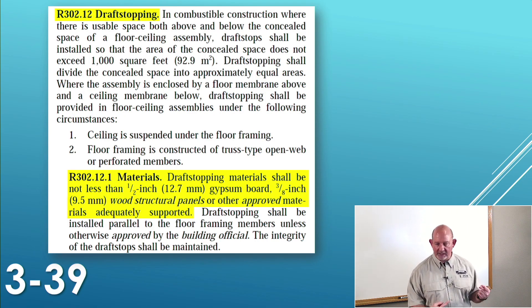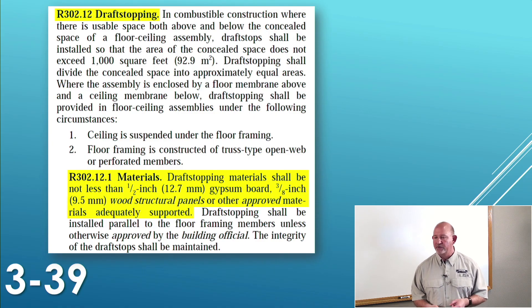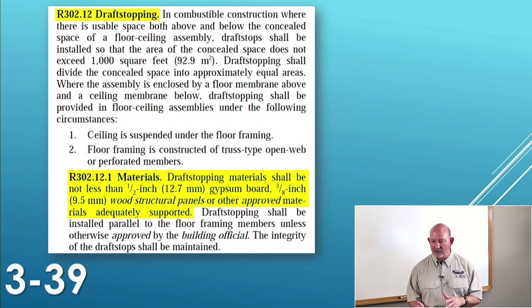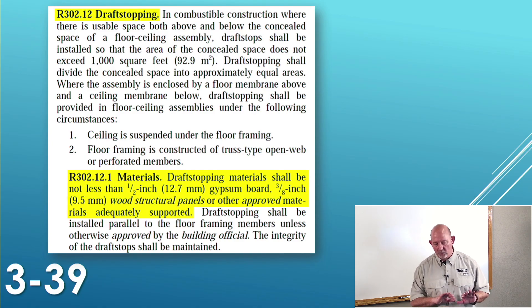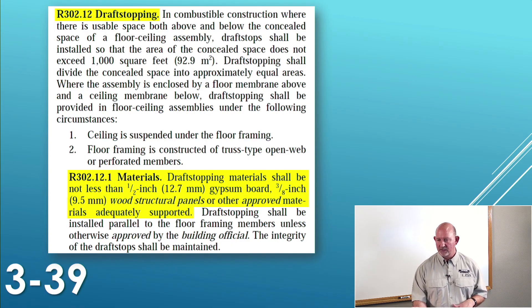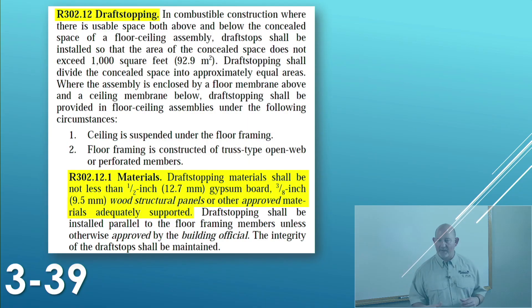Do you see how people see a conflict? The code's telling me two different things — before, they said it had to be a two-by; now they're saying three-eighths. Well, they're talking about two different things. That two-by was for fire blocking; this three-eighths wood structural panel is for draft stopping. You see what I mean — we shouldn't have read that if we wanted this. If you called me confused because one place says three-eighths and another says two-inch, I'd simply ask: why are you reading both? You're either a draft stop or a fire block — never both.